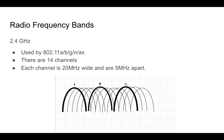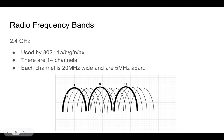If you plot the 2.4 GHz frequency band in a diagram, you have 14 different channels — channel 1, channel 2, channel 3, and so on all the way to channel 14. The separation between the different channels is 5 MHz wide. When you plot this diagram, you realize that we only have three channels that are non-overlapping: 1, 6, and 11. That's why when you look at 2.4 GHz Wi-Fi networks, the channels most likely in use would be 1, 6, and 11.